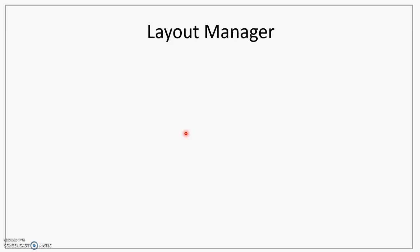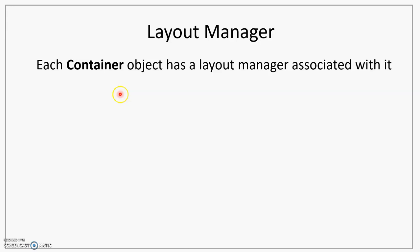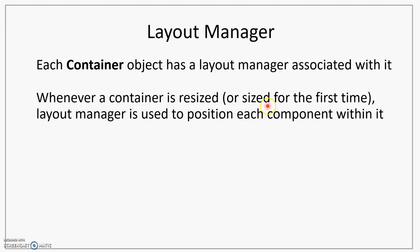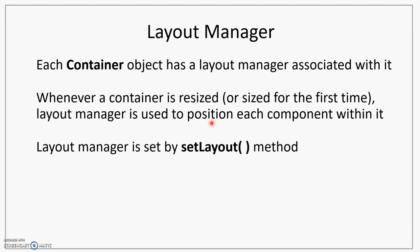In this lecture, we'll study about layout management in a GUI program. Each container object that we create has a layout manager associated with it. Whenever a container is resized, or for the first time when you display the container, the layout manager is used for positioning and placing the components within the container. We have a method in AWT called setLayout that is used for deciding what layout manager the container will use.